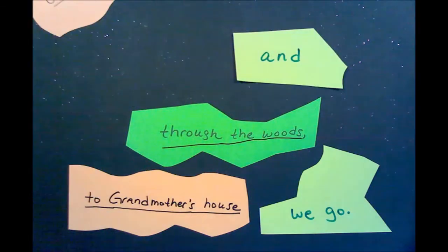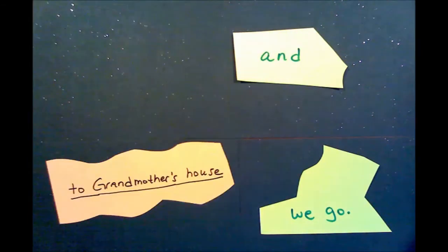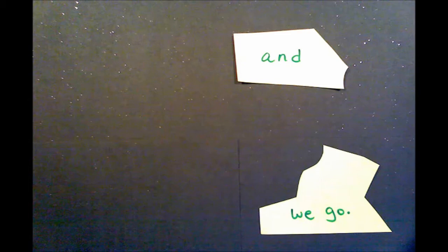Let's take out "over the river," then "through the woods," and "to grandmother's house." What do we have left? We have a conjunction — and — it's of no use, so remove it. What do we have left? "We go." We is the subject, go is the verb, and we have found everything we needed to find.